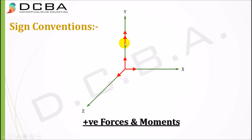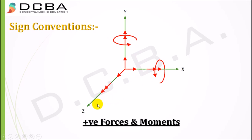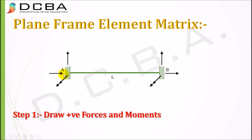Double arrows denote moments. By the right-hand thumb rule, when the thumb points in the direction of the double arrow, the curl of the fingers gives the moment direction. An anticlockwise moment along Y, X, and Z axes gives positive moments. We draw these positive forces and moments at both joints A and B — forces in X, Y directions and anticlockwise moment along Z. Step 1 is done.